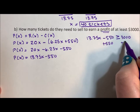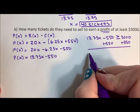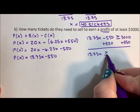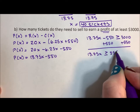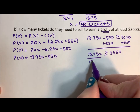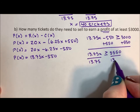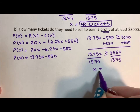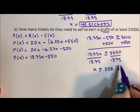We add 550 to both sides, so 13.75x is greater than or equal to $3,550. Divide by 13.75 and get that x is greater than or equal to approximately 258.18.